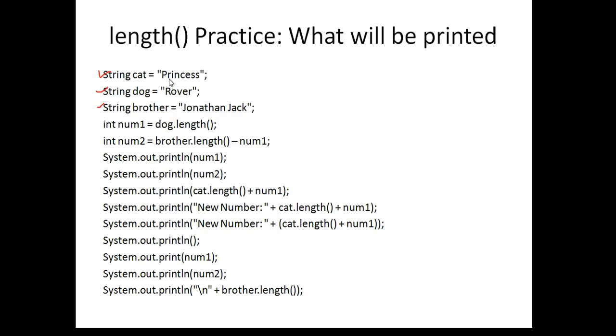So you have princess: one, two, three, four, five, six, seven, eight. So there's eight characters in here. And then Rover has five. And then Jonathan, if we count that, including the spaces, it is 13.